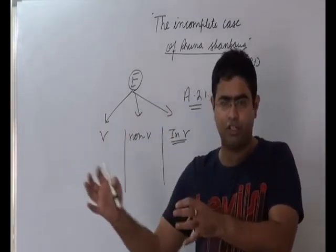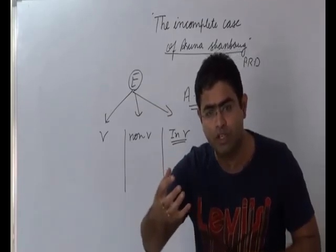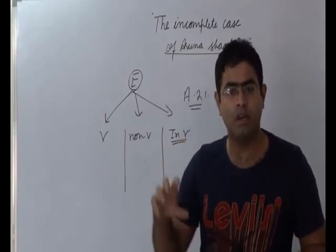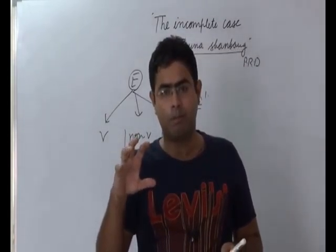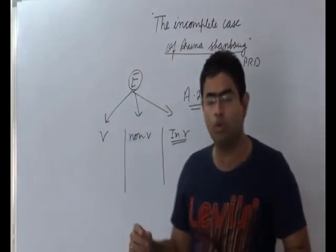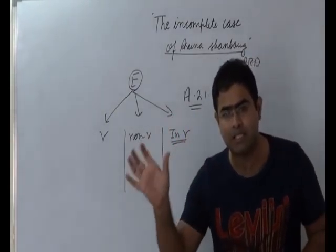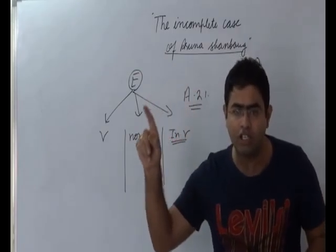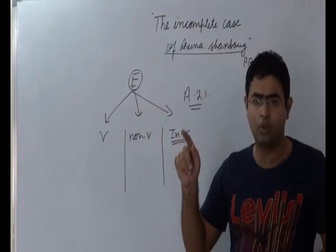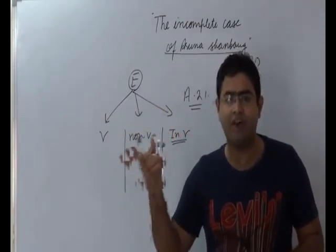Another type is passive non-voluntary euthanasia. How can we differentiate between active and passive? Passive means you withdraw the life support system. When you withdraw the life support system, when you will not provide therapeutic cure, that will actually lead to the death of the person, and that kind of euthanasia is known as passive euthanasia. You are not deliberately making an effort to end the life of that person, but you are not making an effort to save his life.